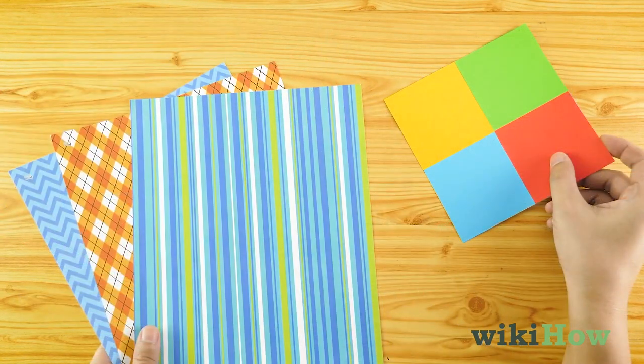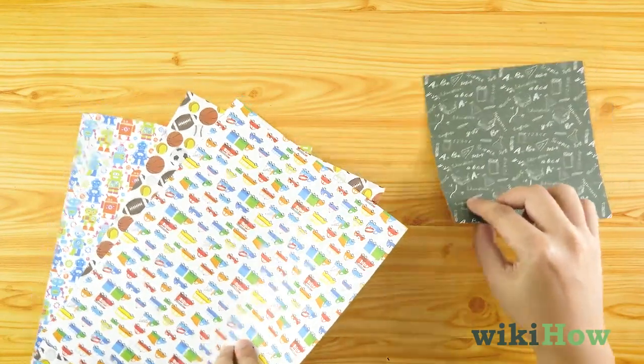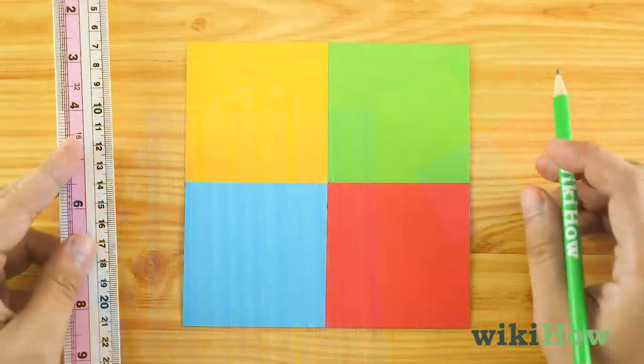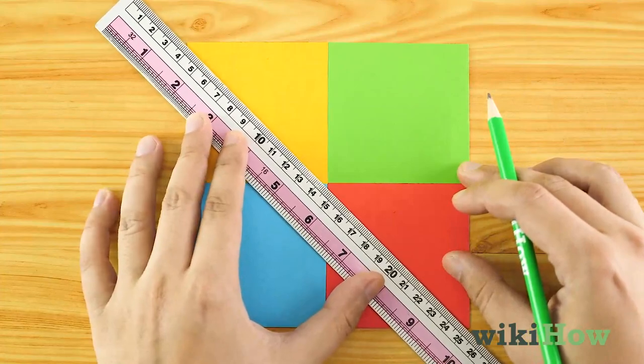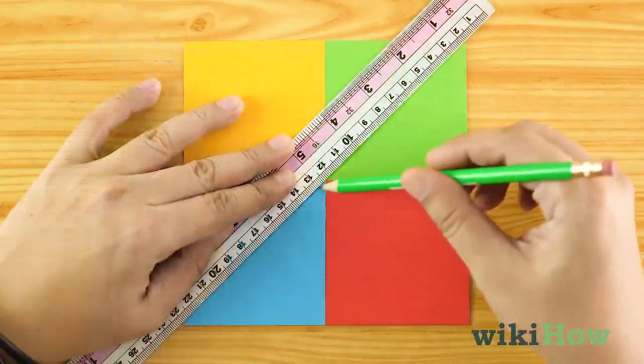Double-sided scrapbooking paper works best because it has designs on both sides. Trace diagonal lines from the center of the paper to every corner using a pencil and a ruler.